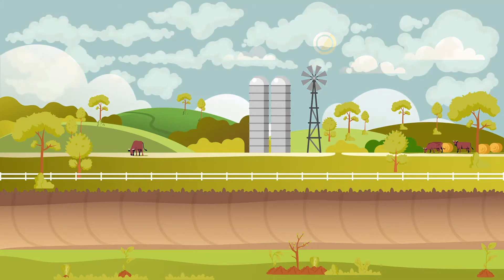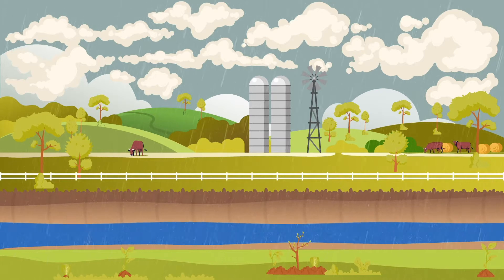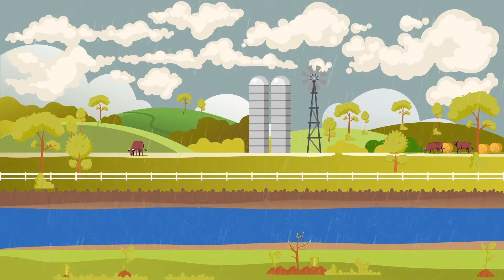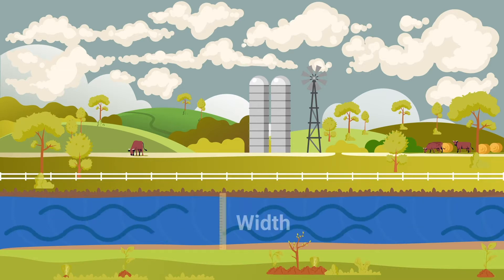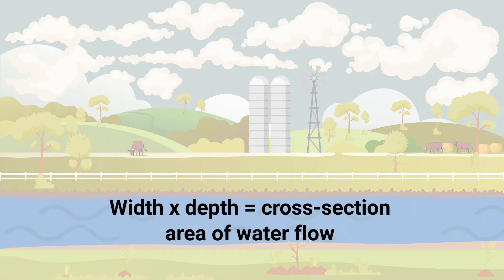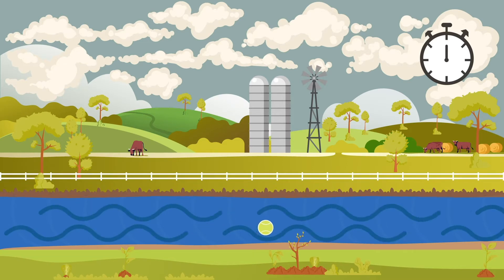In small catchments, it is relatively easy to estimate the volume of water travelling through your gully at peak flow. At your gully head, multiply the depth of the highest recorded flow through the gully by the width of the flow. This gives you a cross-section area of the water flow in square metres. Next, you must estimate the flow rate. The flow rate is easily measured by timing a floating object over 10 seconds and measuring the distance it travels.